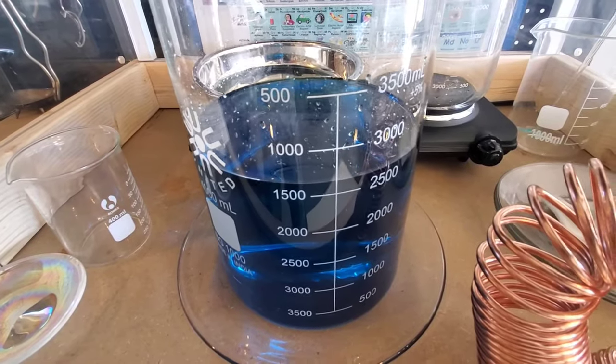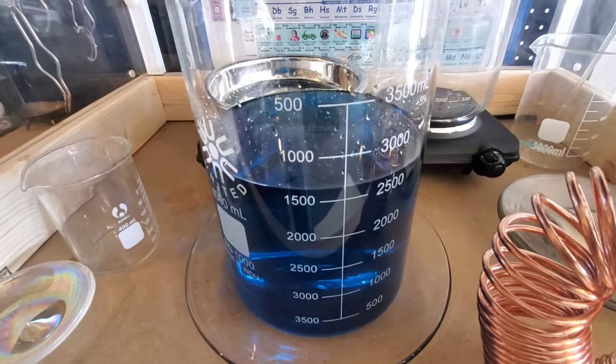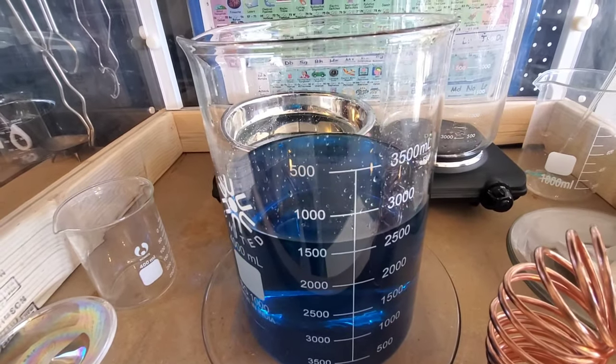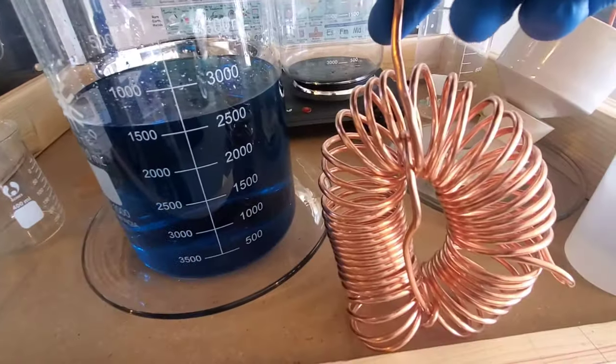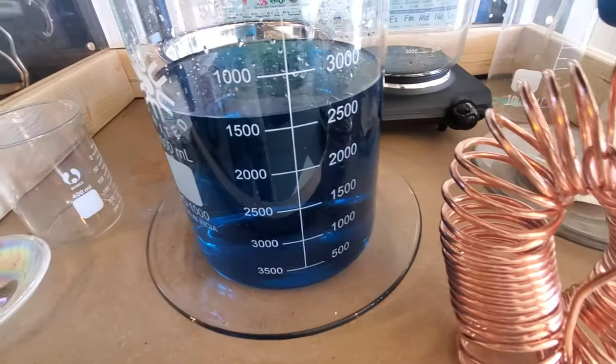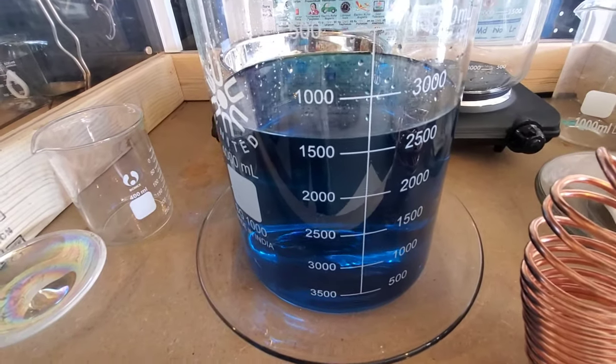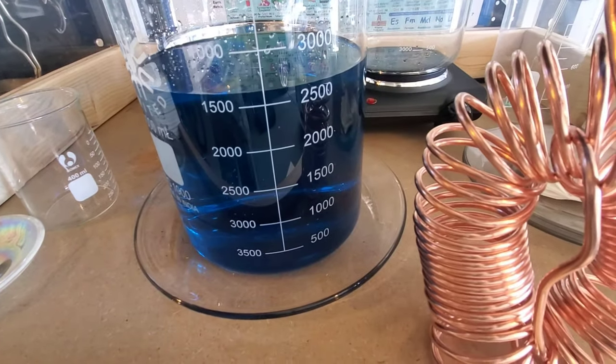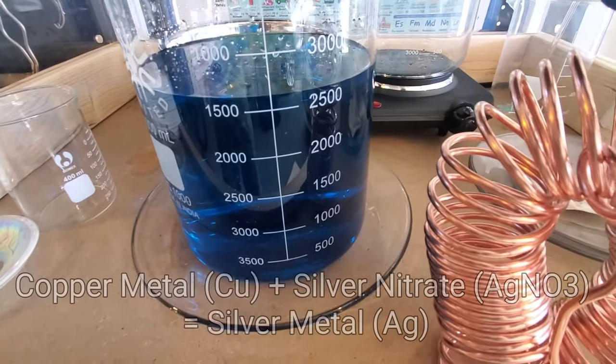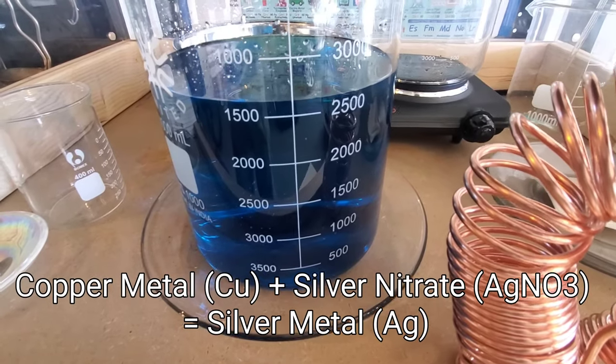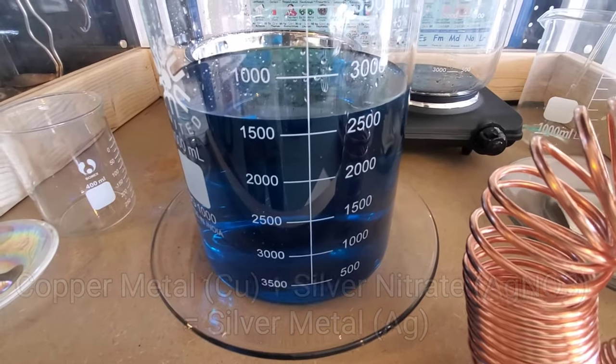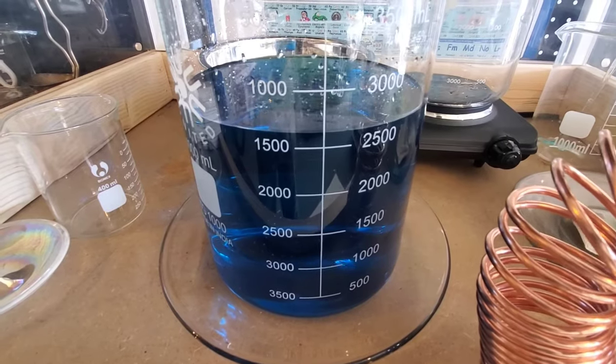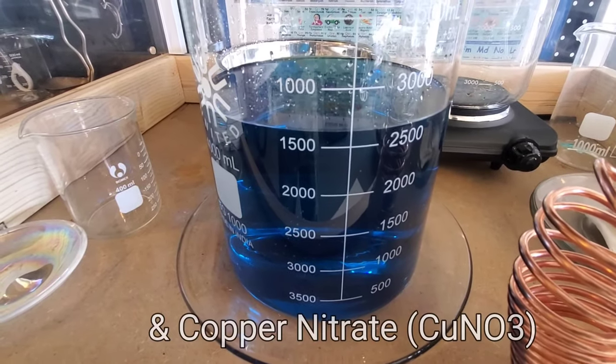I've transferred my silver nitrate back into this large beaker. Now it's time to place the copper wire into the silver nitrate. The silver nitrate will exchange ions with the copper, turning the silver nitrate back into a solid state of silver. And then the copper will actually change into a copper nitrate.